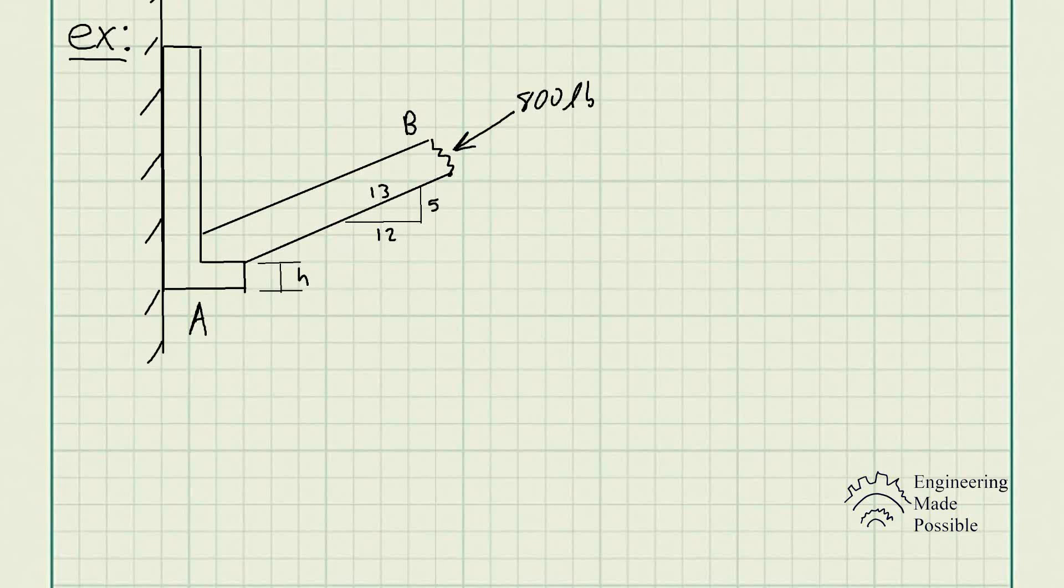For this problem, we have member B subjected to a compressive force of 800 pounds. If A and B are both made of wood and are 3/8 inch thick, determine to the nearest 1/4 inch the smallest dimension h of the horizontal segment so that it does not fail in shear. The allowable shear stress for the segment is only 300 pounds per square inch.